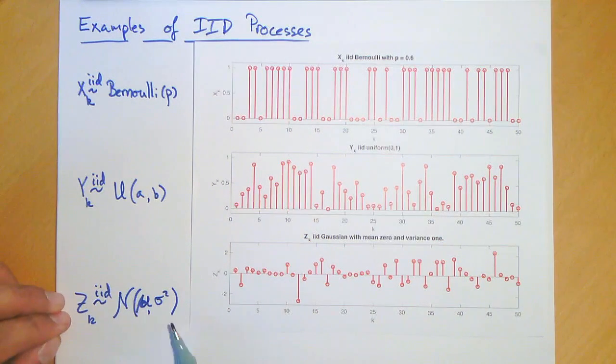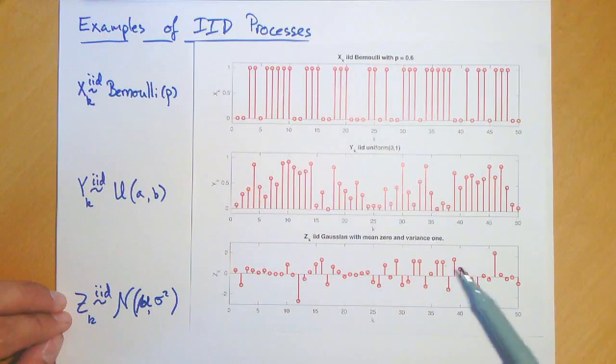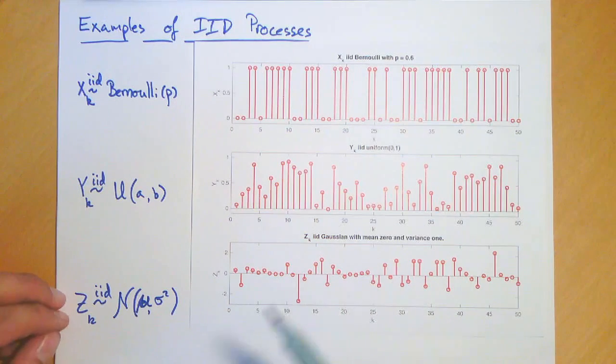The final example here is a Gaussian or normal process. IID Gaussian process with mean mu and variance sigma square. This is the same mean for all the random variables and the same variance for all the random variables. In our example here, we have taken mean 0 and variance 1. So that means that all samples are distributed somehow around 0 and they are not too far off. They are fairly close to 0, all of them, and we see there are few that have greater values but most of them are close to 0.